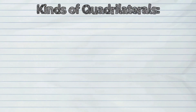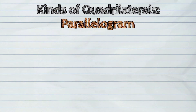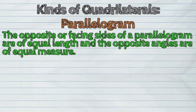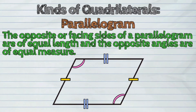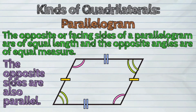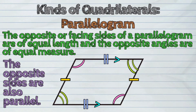The following are the kinds of quadrilaterals. First, a parallelogram. The opposite or facing sides of a parallelogram are of equal length, and the opposite angles are of equal measure. The opposite sides are also parallel.